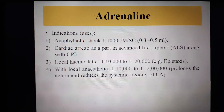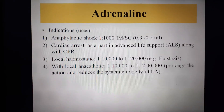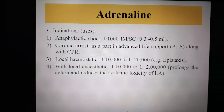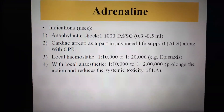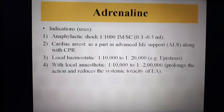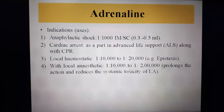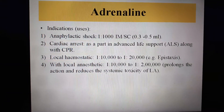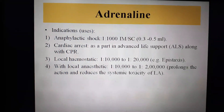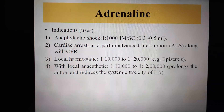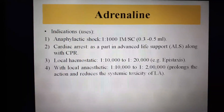The current uses of Adrenaline are: first, anaphylactic shock — it is the preferred and life-saving drug, used at 1:1,000 concentration by intramuscular route, 0.3 to 0.5 ml. Second, cardiac arrest as part of advanced life support along with CPR. Third, as a local hemostatic agent, for example in epistaxis, at 1:10,000 to 1:20,000 concentration. Fourth, along with local anesthetics at 1:10,000 to 1:2,00,000 to prolong their action and reduce systemic side effects.